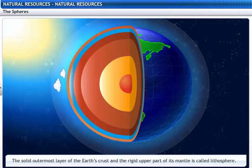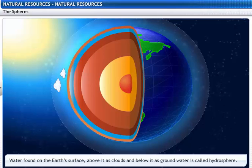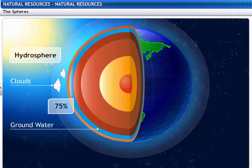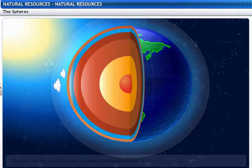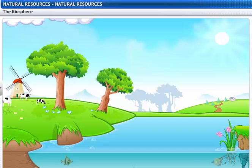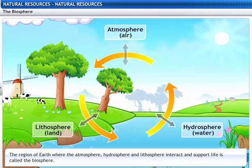The solid outermost layer of the earth's crust and the rigid upper part of its mantle is called the lithosphere. The water found on the earth's surface, above it as clouds, and below it as groundwater is called the hydrosphere. It constitutes 75% of the earth's surface. The air that covers earth like a blanket is called the atmosphere. The region where the atmosphere, hydrosphere and lithosphere interact and support life is called the biosphere.